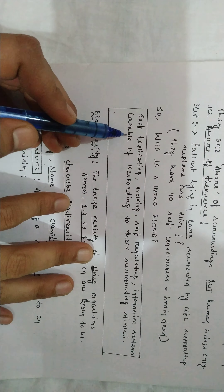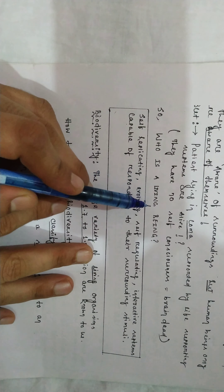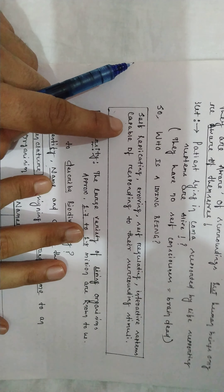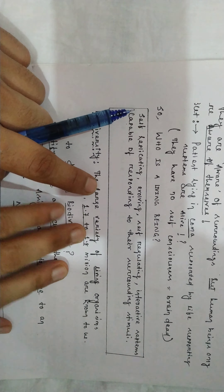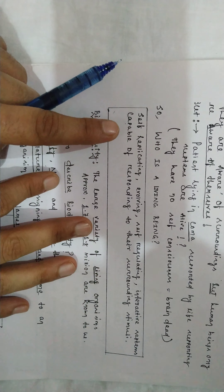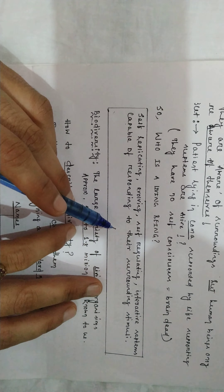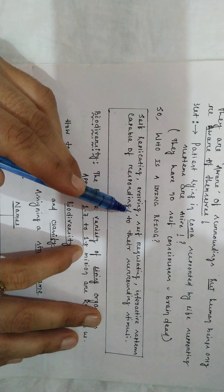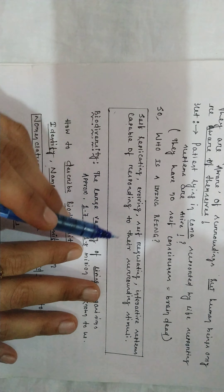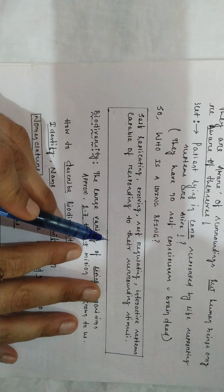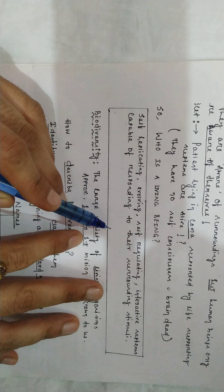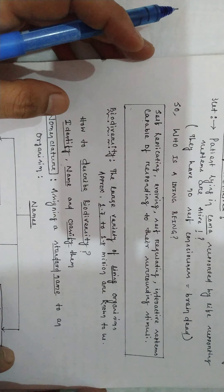When you deal with a living being, a living being is a self-replicating, evolving, self-regulating, interactive system capable of responding to their surrounding stimuli. That is the definition of a living being.